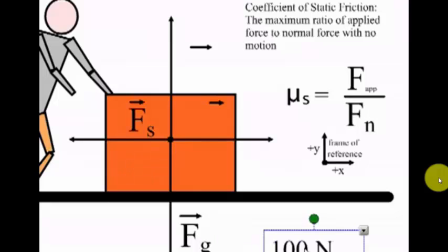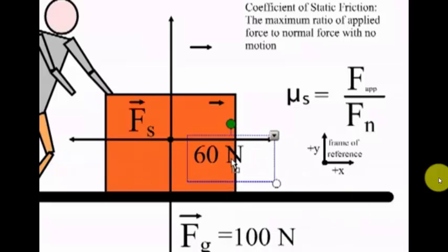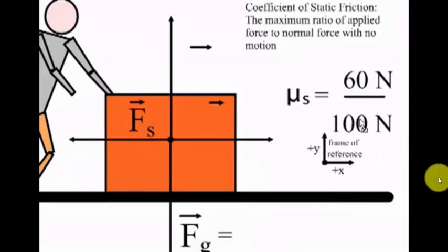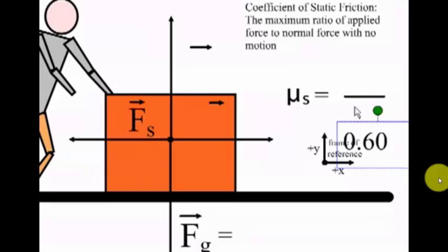For example, if the force of gravity on an object was equal to 100 newtons, and the applied force was 60 newtons, then my equation would end up looking like this. And ultimately, my coefficient of friction would look like this. It would be 0.6.